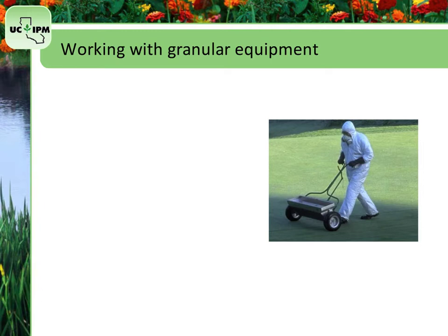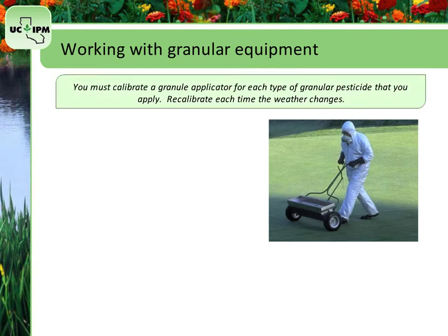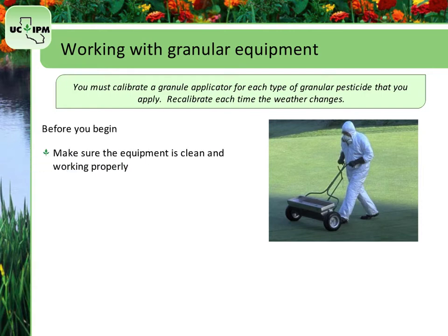As with liquid pesticides, equipment for applying granular formulations must be calibrated. Calibrate granular applicators each time you use a new product. Granules vary in size and shape from one pesticide to the next, and this affects the flow rate. You should also recalibrate the equipment each time the weather changes, since temperature and humidity affect the flow of granules. Before you begin, make sure that the equipment is clean and working properly.